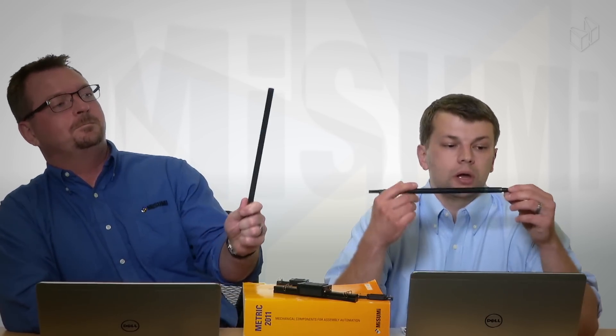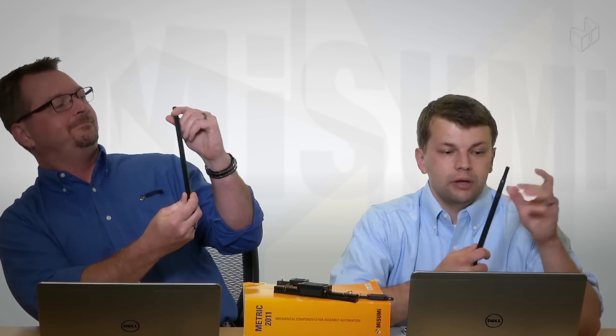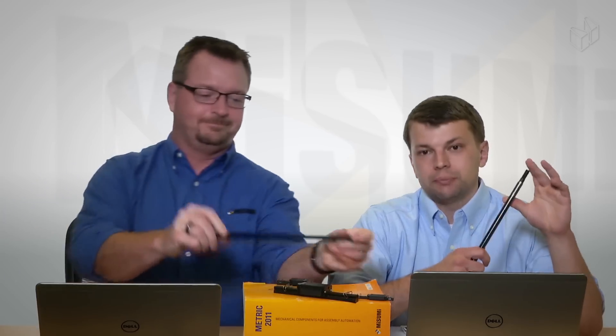So now that we know a little bit about applications, we know a little bit about the low temperature black chrome, what kind of products can we get this on from Misumi? Yeah, you can actually get this on a range of different components that we manufacture, obviously we mentioned linear shafts.